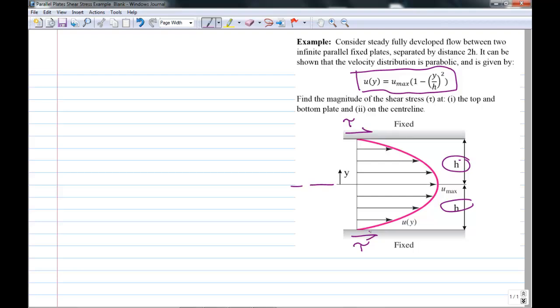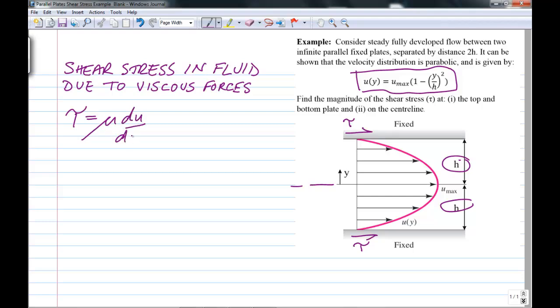So we're after calculating the shear stress in the fluid at those surfaces due to viscosity. And we learned in chapter one that the shear stress is the dynamic viscosity times the strain rate, which is also the local velocity gradient.